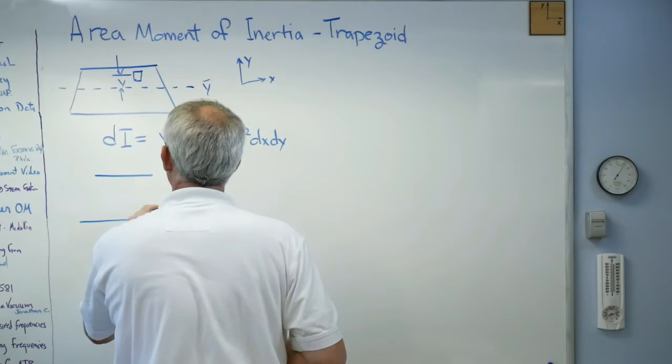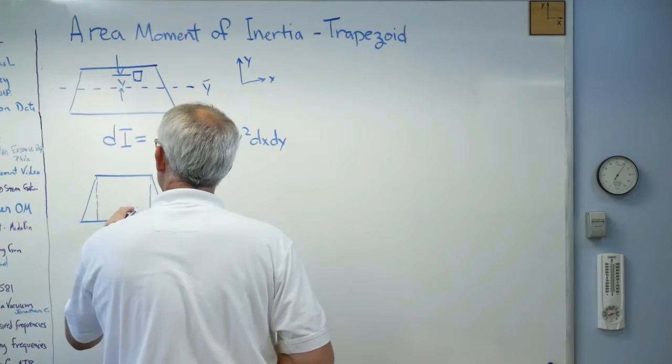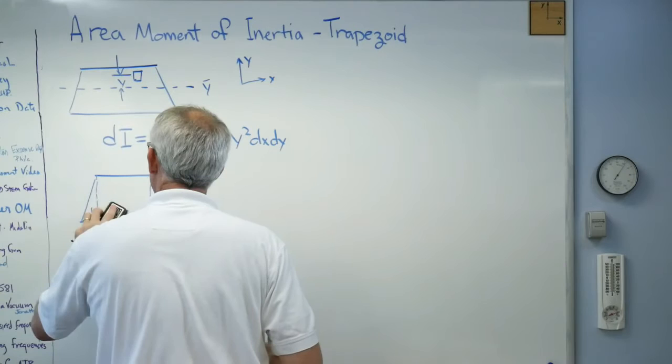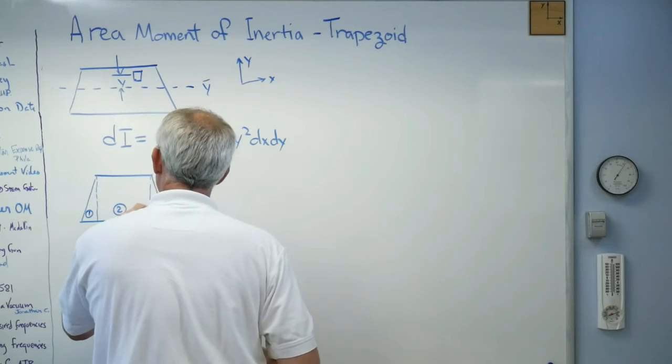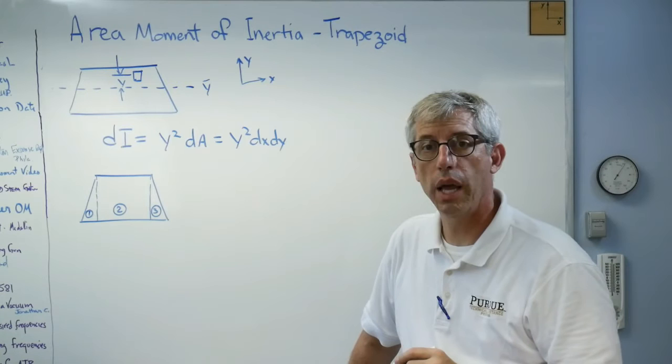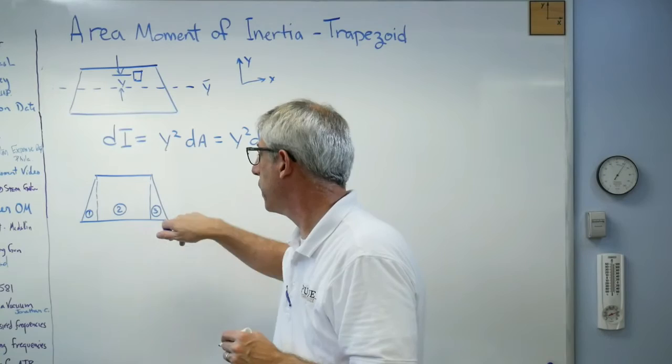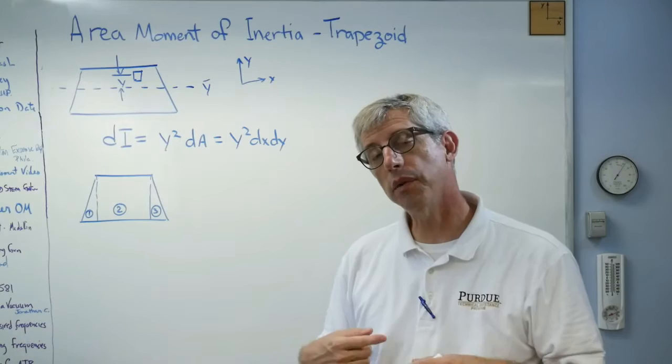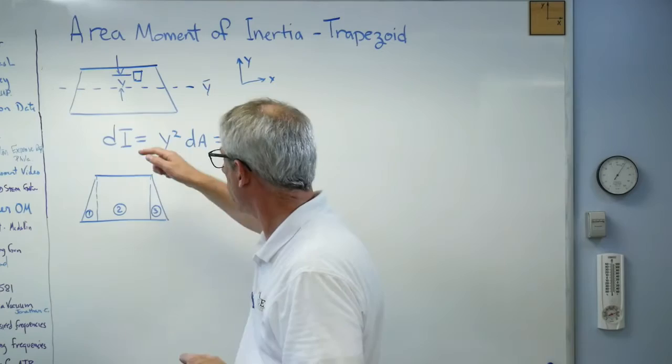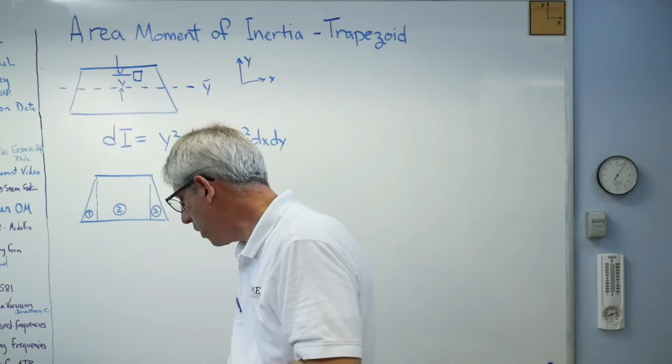What we'll typically do is we'll divide a shape into a couple simple shapes. Maybe I'll call that one, two, let's make those circles. One, two, and three. So two triangles and a rectangle. Well, if I have two triangles and a rectangle making up my more complex shape, I can figure out the area moments of inertia of those three shapes, and if I add them together correctly, I'll get the area moment of inertia of the total shape. So, whether you do it this way or this way, you're going to get this number.